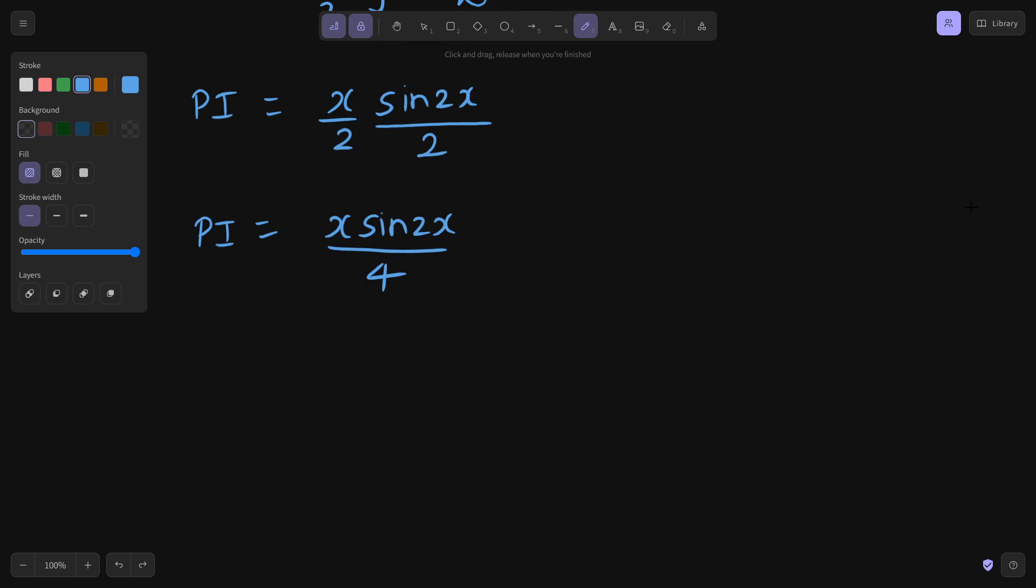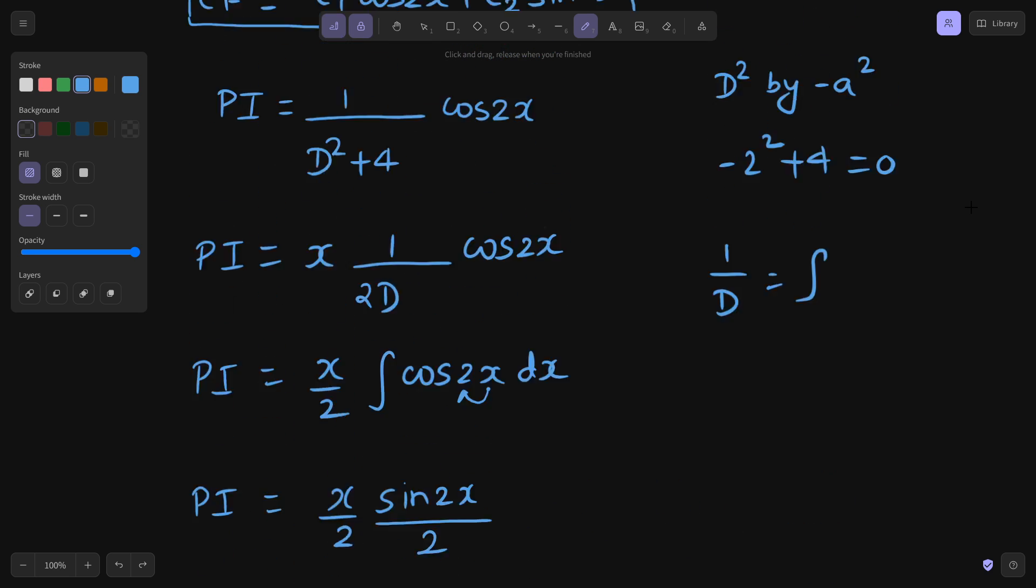So this is PI is x sin 2x divided by 4. Final solution is y equals CF plus PI. So your CF was C1 cos 2x plus C2 sin 2x, and your PI is 1 by 4 x sin 2x. So this is your final solution. Y equals C1 cos 2x plus C2 sin 2x plus 1 by 4 x sin 2x. Again, it was very simple.